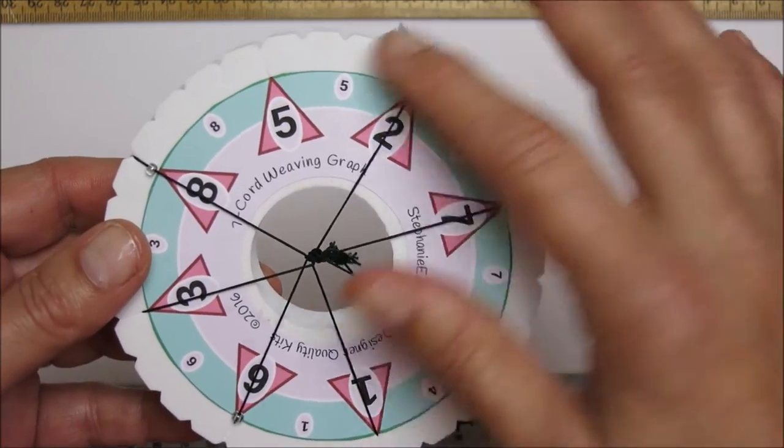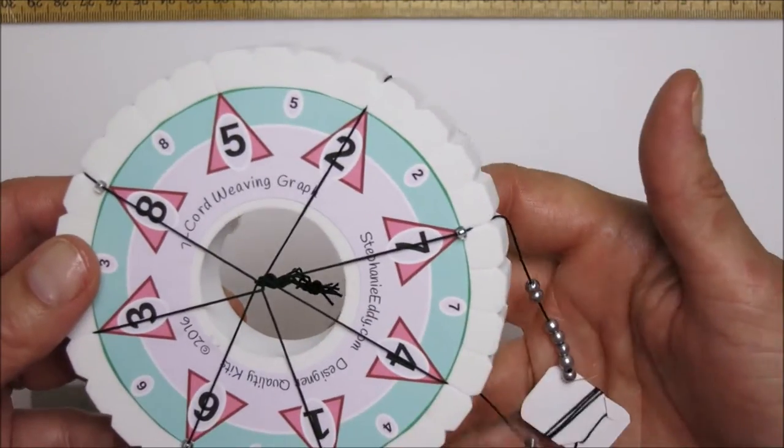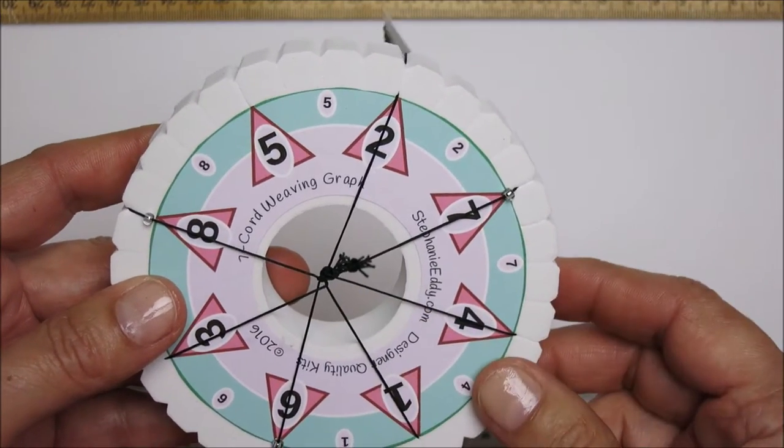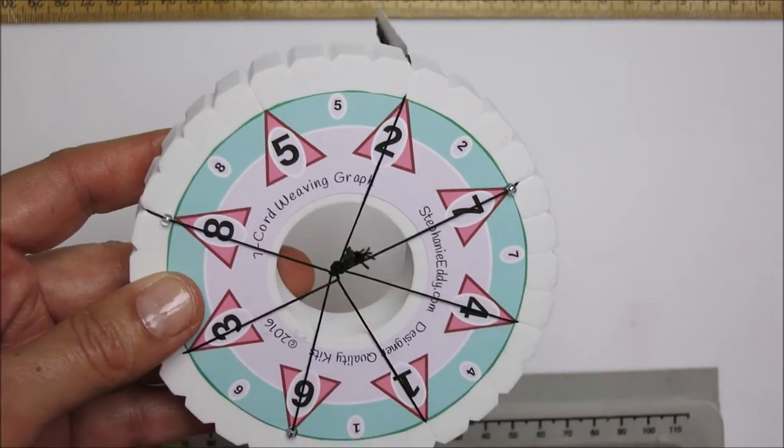So once you have your label on, you'll go ahead and set up your strands. You'll want to do three rows with no beads and you will want to leave position number five open.